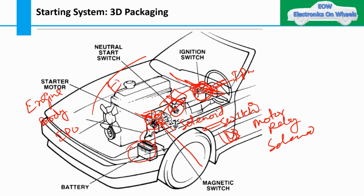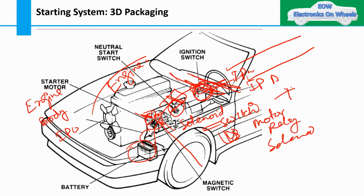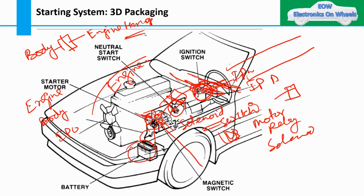If you are going from engine to IP, you have to use one inline connector. We call this particular harness the engine harness, then the body harness, then the IP harness. If you are going into a different zone, you have to apply the inline connector and then connect to the different harness. So if I am going from body to engine, I have to put one inline connector to go to the engine harness. I have already discussed in the connector videos the advantages and disadvantages of inline connectors.